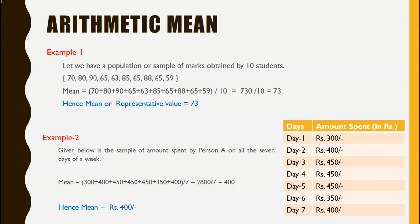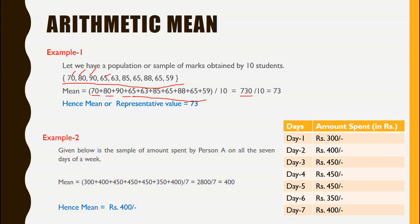Let's revisit the previous examples. In the first example, we are given a list of marks obtained by 10 students in a subject as shown in curly braces. If we want to find out the mean of this series, we will add all the terms and divide by the total number of terms. When we add all the terms, the total turns out to be 730. Because there are 10 terms in this series, we divide by 10, and the mean turns out to be 73. Hence, the mean or representative value of the series turns out to be 73.